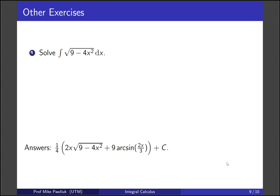Solve the integral of the square root of 9 minus 4x squared. Here the difference is that it's constant minus x squared, not x squared minus constant.